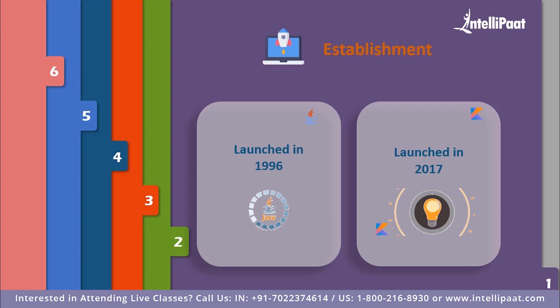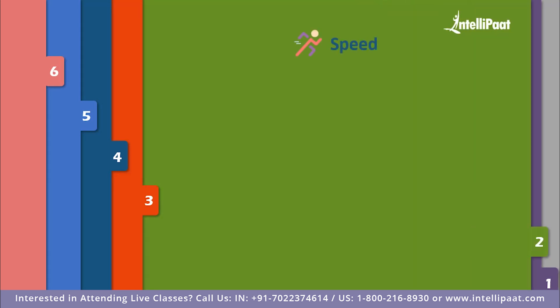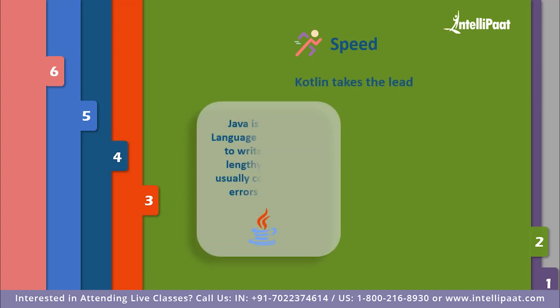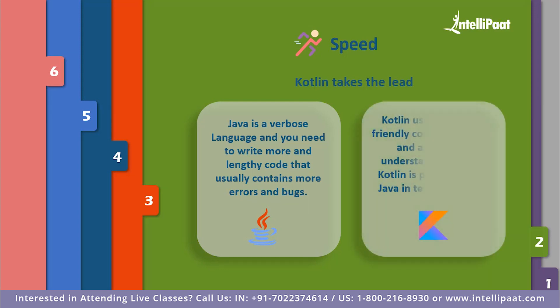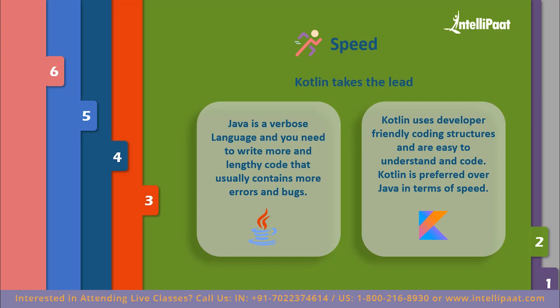Our second factor is compilation speed. Java is a verbose language — you need to write more lengthy code that usually contains more errors and bugs. Kotlin uses developer-friendly coding structures and norms that are easy to understand and use. In case of longer code compilation, Kotlin is preferred over Java. When you have larger applications or a bunch of files to execute, Java is somewhat less considered in terms of speed.